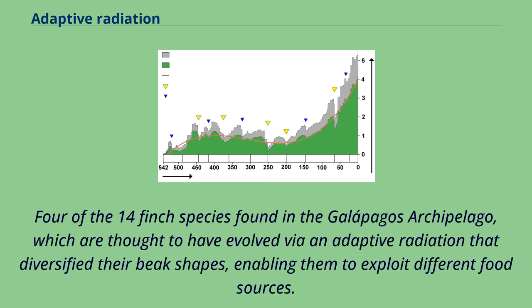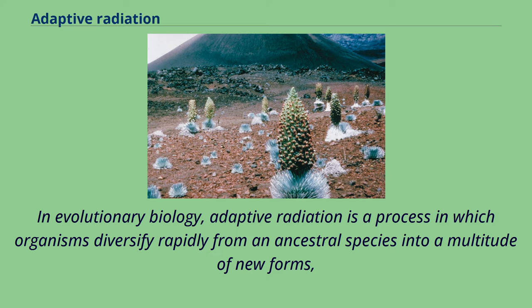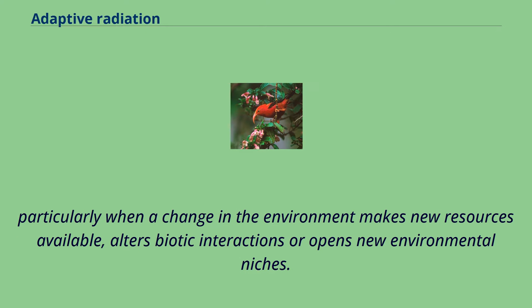Via an adaptive radiation that diversified their beak shapes, enabling them to exploit different food sources. In evolutionary biology, adaptive radiation is a process in which organisms diversify rapidly from an ancestral species into a multitude of new forms, particularly when a change in the environment makes new resources available, alters biotic interactions, or opens new environmental niches.